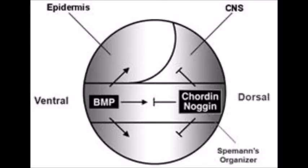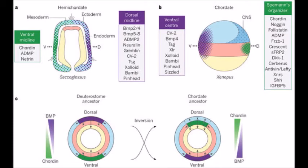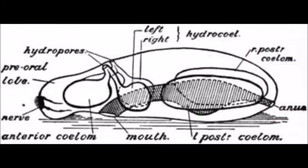What about those genes? In deuterostomes, we have genes called Chordin and BMP that pattern our dorsal-ventral development. Protostomes have homologues of these called SOG and DPP, respectively. Chordin is expressed on our dorsal side, while BMP is expressed on our ventral side. Like the development of the mouth and anus, the homologues of these genes in protostomes develop oppositely — the homologue of Chordin develops ventrally and BMP dorsally. Hemichordates, like protostomes, express their Chordin ventrally and their BMP dorsally. This means that the protostome development of Chordin and BMP is the ancestral state, and that a dorsal-ventral inversion occurred in the evolution of deuterostomes.